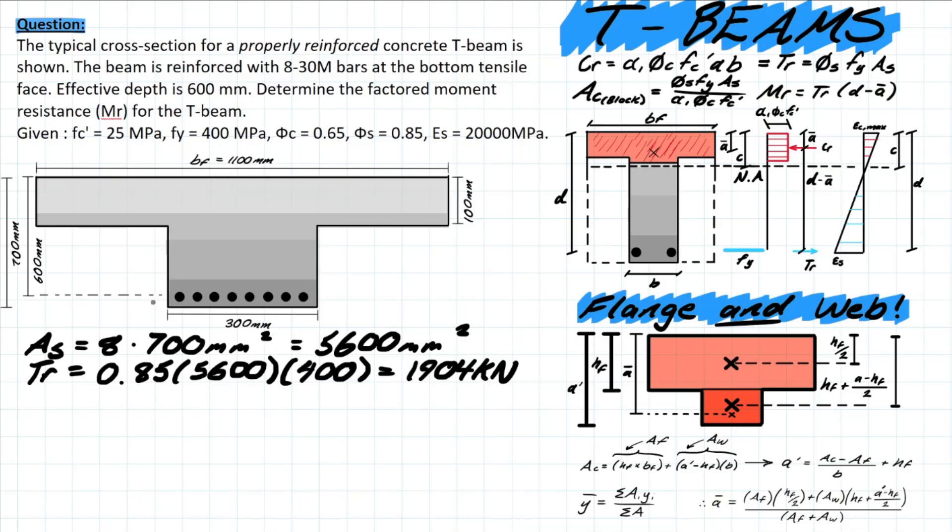Now we're going to assume once again that our bf is going to be our b value when we're solving this a formula. The formula is TR over α₁φc f'c b, and that b value is going to be bf as our initial assumption. Why is that? Because we are assuming at first that the neutral axis and the compressive block are going to be in our flange alone, and in order for that condition to be met this value of a has to be less than 100.